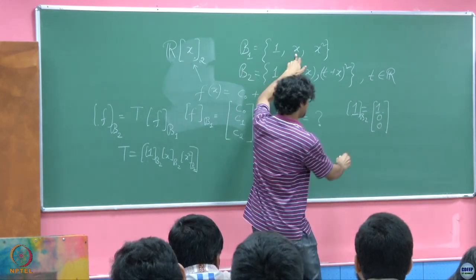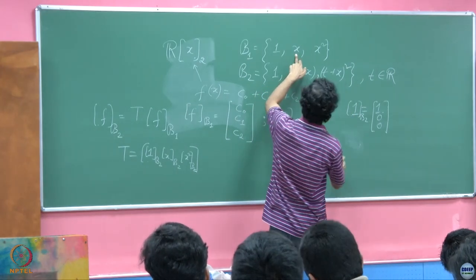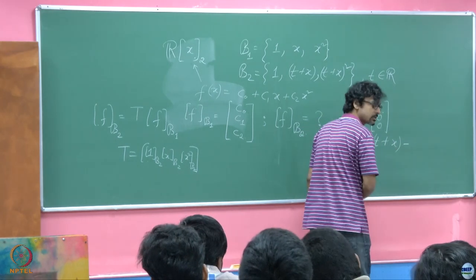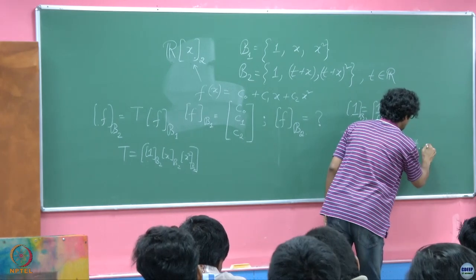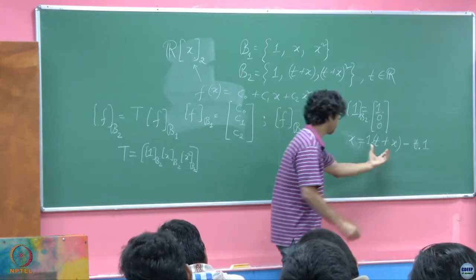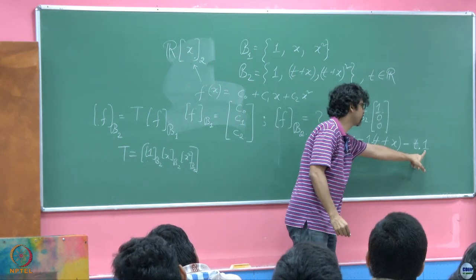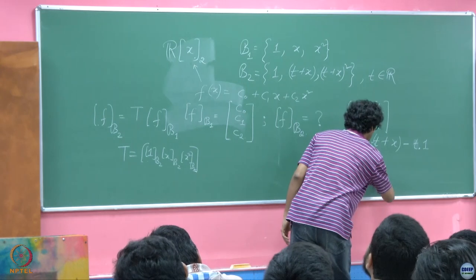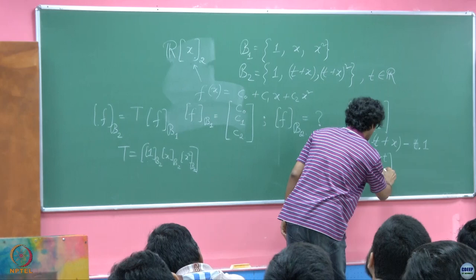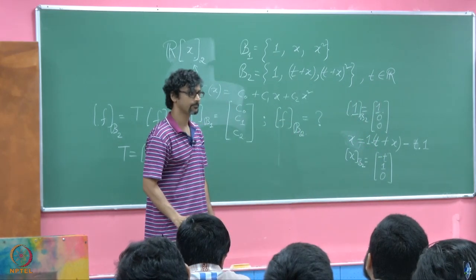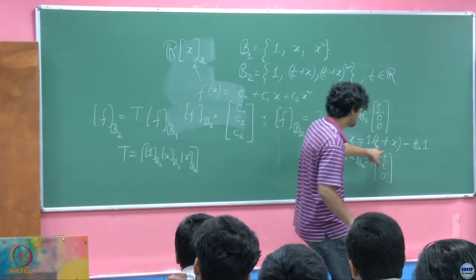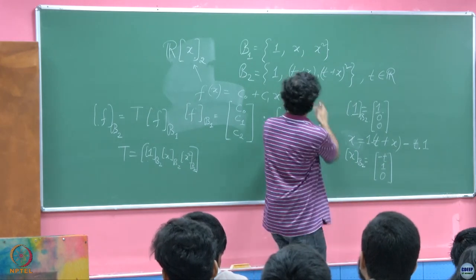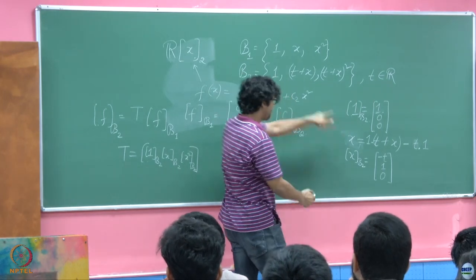What is x in terms of fellows in B2? We can write x = (t + x) − t·1, which is the second element of B2 minus t times the first element of B2. So when I write x in terms of the second basis, its representation is (−t, 1, 0). It is just (t + x) − t·1, where 1 is the first member in the basis set B2 and (t + x) is also a member. Taking the difference with one scaled by t gives back x.